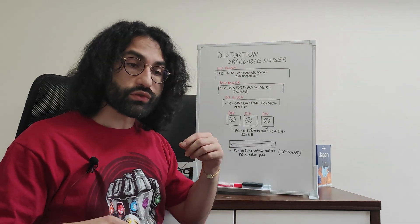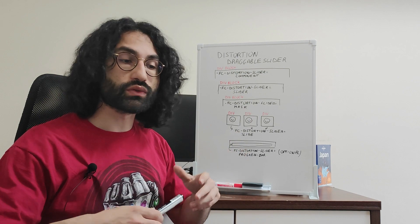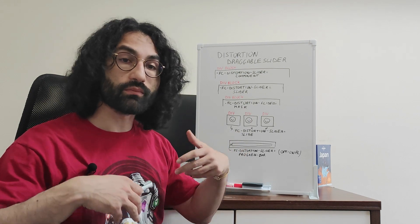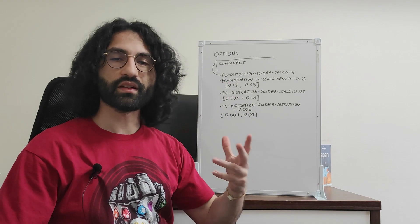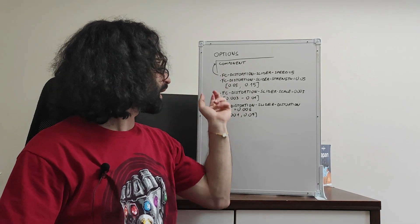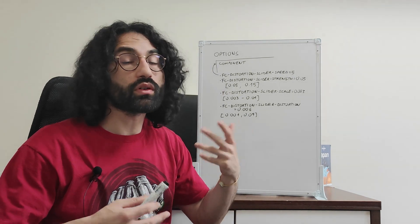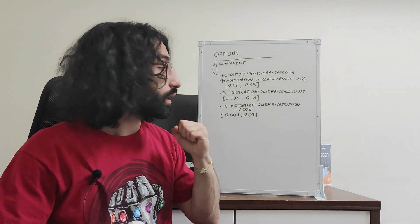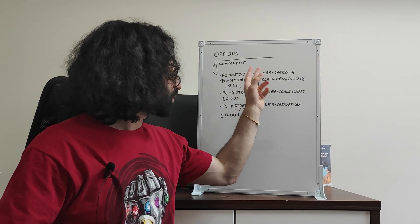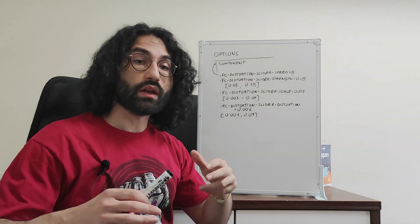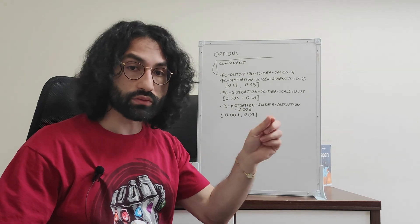And now, before jumping right into Webflow, let's take a look at a few options that we can use to further configure and customize the slider. All these options need to be applied to the component element, and because they are just options, we can decide to use them or we can just stick with default values. For example, here we have the fc-distortion-slider-speed option, which is just the speed of the slider while dragging.